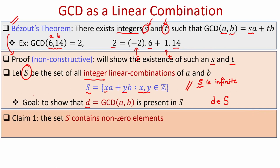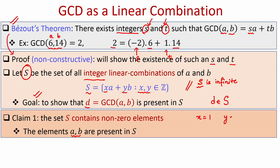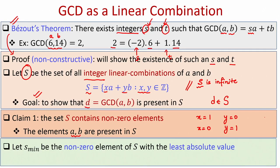I will prove my goal using a series of claims. The first claim is very simple: the set S definitely contains nonzero elements. It will contain 0 as well, since setting X and Y to 0 gives 0 times A plus 0 times B equals 0. But other than 0, the set S also has nonzero elements. Two trivial examples are A and B themselves: if X equals 1 and Y equals 0, we get A belonging to S, and if X equals 0 and Y equals 1, we get B belonging to S.